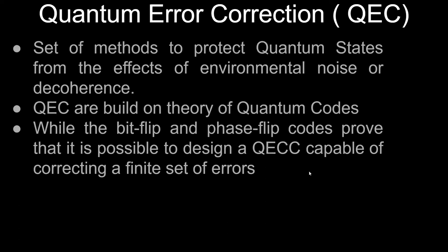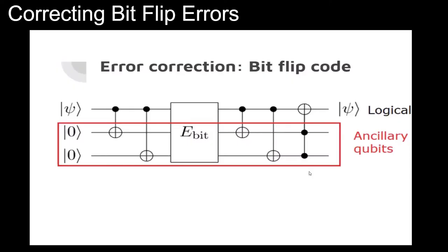The bit flip code uses two ancillary qubits — also known as ancilla or helper qubits — mapped with the logical qubit (represented as phi). The block diagram shows two ancillary qubits mapped to the logical qubit. In the end, a Toffoli gate is applied, which helps to measure the ancillary qubits relative to the logical qubit.